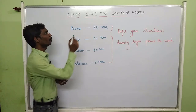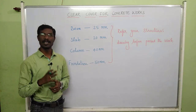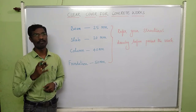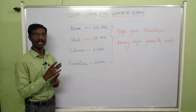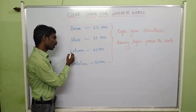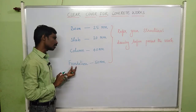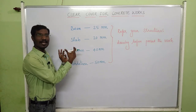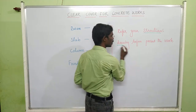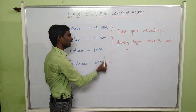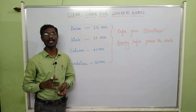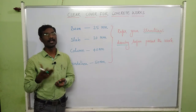Now we will discuss the clear cover for concrete works. For beams: 25mm. For slabs: 20mm. For column works: 40mm. For foundation works: 50mm. These are the standard clear covers. You can also refer to your structural drawings before proceeding with your works. Using these clear covers will avoid corrosion and increase the lifetime of your concrete structural elements.